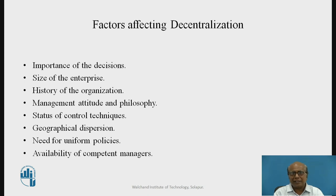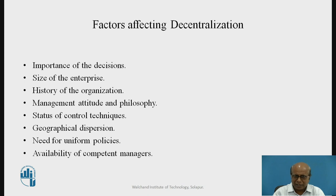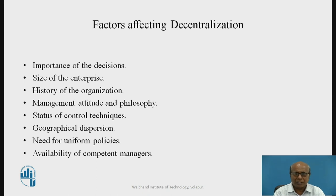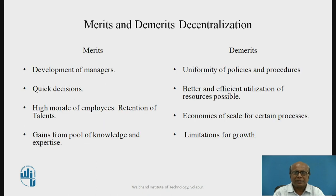One more factor is availability of competent managers. If competent managers are available, then only we can decentralize. If there is no such availability, the authority will again be concentrated towards the top — it will lead to centralization. So these are the different factors affecting decentralization.